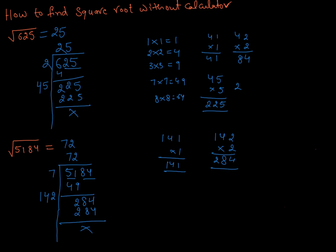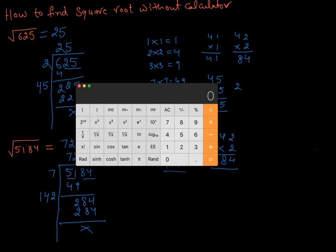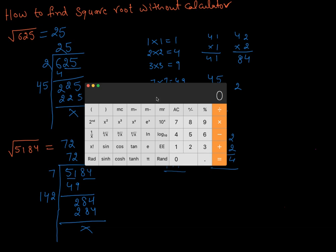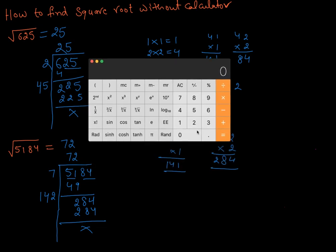Let's see, I will bring up my calculator and see if we can do it. There you go. So 5182, 51, sorry, 5184, and we are doing square root. There you go, 72. 72. So without using the calculator, you can find square root of any number.